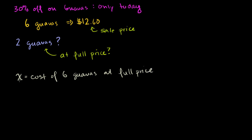So essentially if we take 30% off of this, we should get $12.60. So if we have the full price of six guavas, we're going to take 30% off of that. So that's the same thing as 0.30, or I could just write 0.3. So that's the full price of six guavas minus 0.30 times the full price of guavas. So I'm literally just taking 30% off of the full price. This is how we figure out the sale price. This is going to be equal to that $12.60 right there.